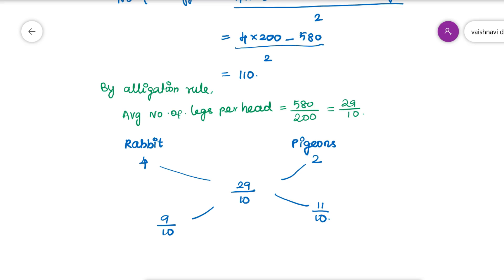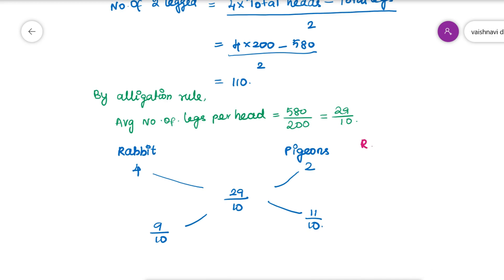The ratio of rabbits to pigeons is 9 to 11. So in the zoo, out of 200 total, there are 9X rabbits and 11X pigeons.